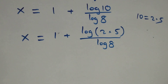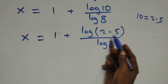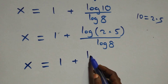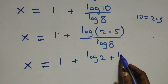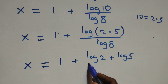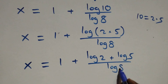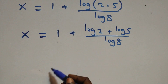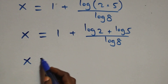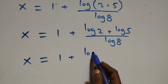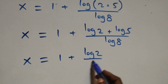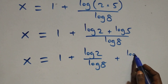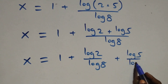This also follows the log product rule, and what we have becomes x = 1 + (log2 + log5) over log8. Then we separate this into two fractions: x = 1 + log2/log8 + log5/log8.